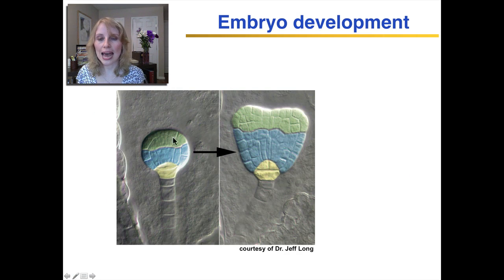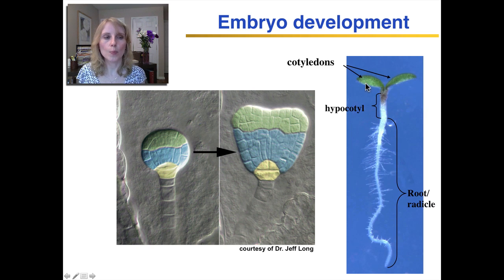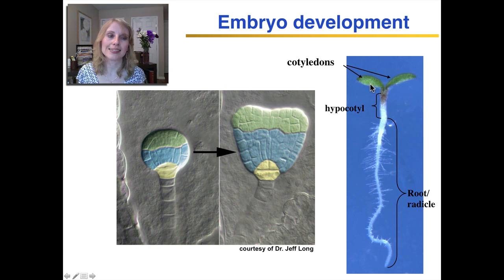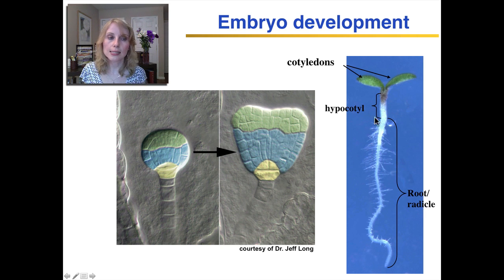The embryo initially has a ball shape and then becomes a heart shape. The two lobes of the heart develop into the first seedling leaves called the cotyledons — they're the first leaves that form in the embryo. Underneath the cotyledons is a short stem called the hypocotyl, and then a root, which in embryos is sometimes referred to as the radicle. So the plant embryo is very simple: just cotyledons, a short stem, and a root.